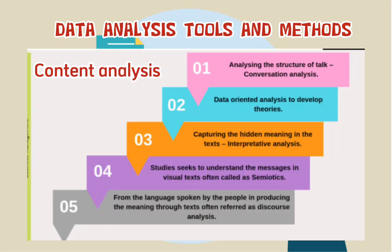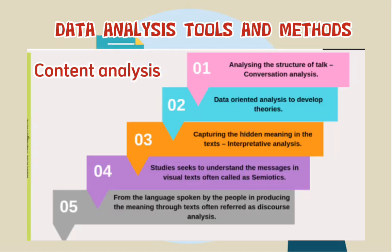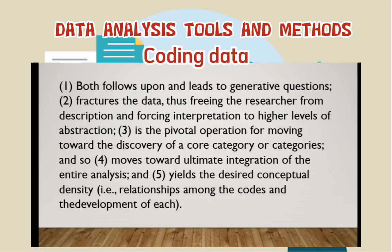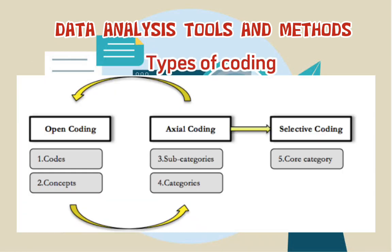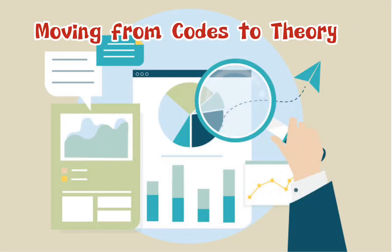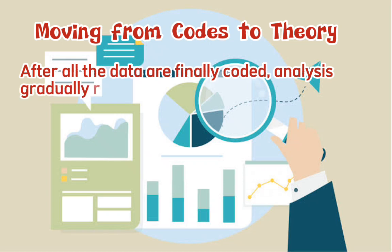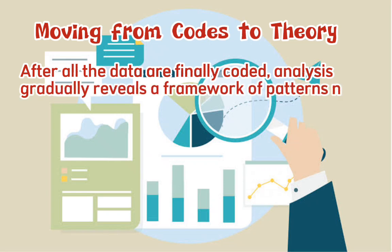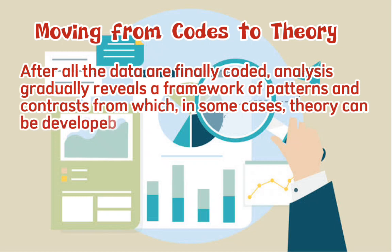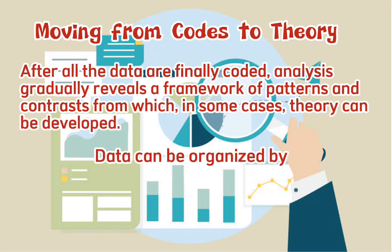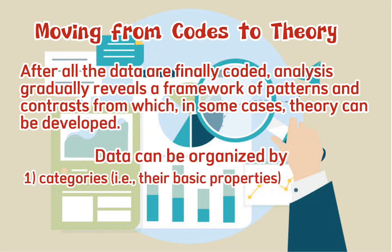Content analysis and coding data are also key tools. Types of coding feed into moving from codes to theory: after all the data are finally coded, analysis gradually reveals a framework of patterns and contrasts from which, in some cases, theory can be developed. Data can be organized by: categories (their basic properties), themes (their broad threads of overarching meaning), and concepts (their explanations).